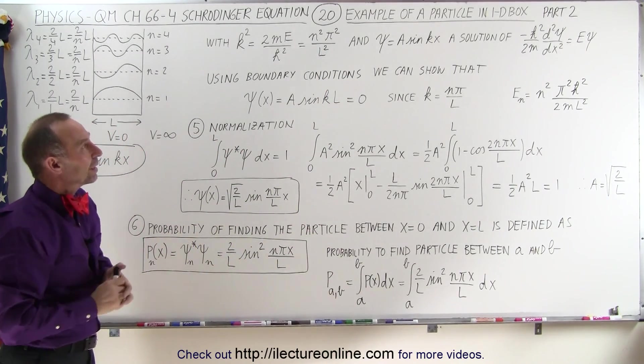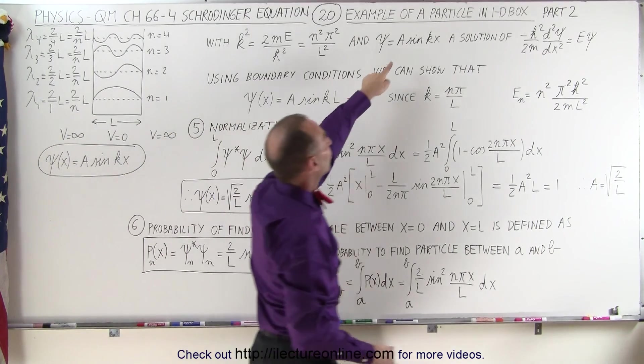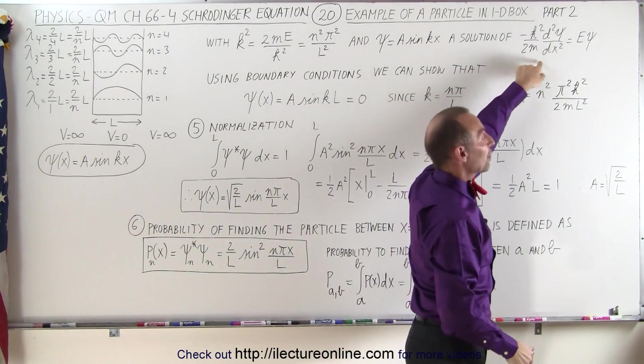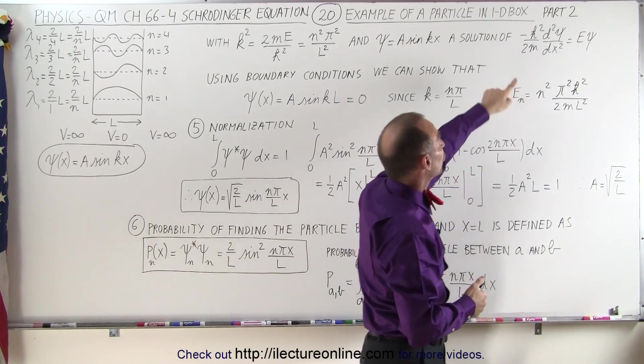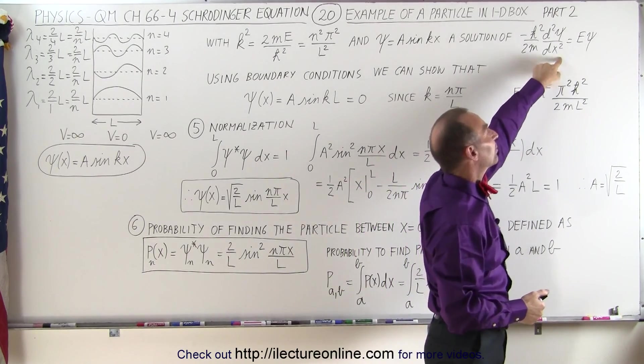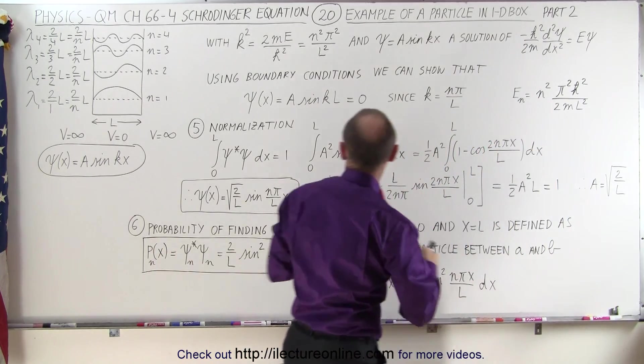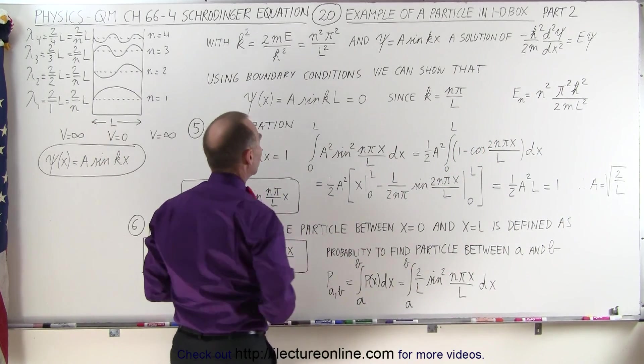Well, we also realized that this was the solution to the Schrödinger equation, the time-independent Schrödinger equation, which did not have a potential term because inside the box here, potential was equal to zero.